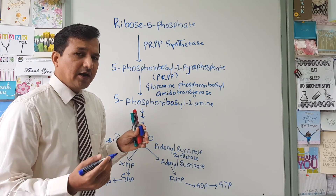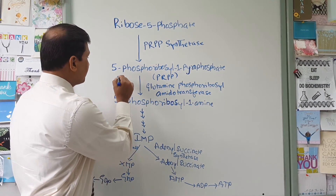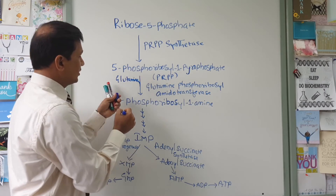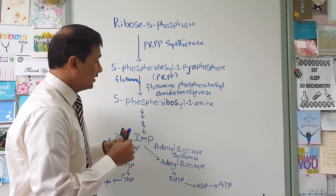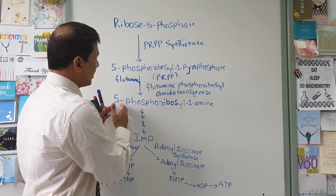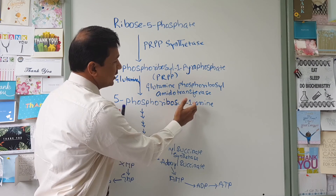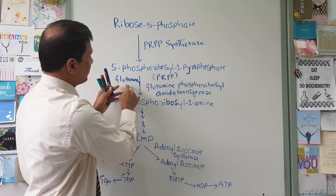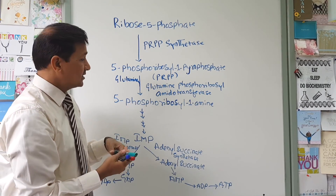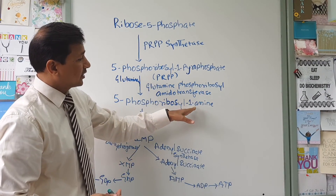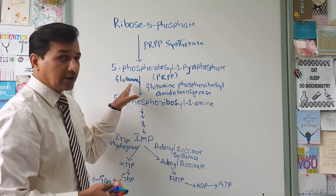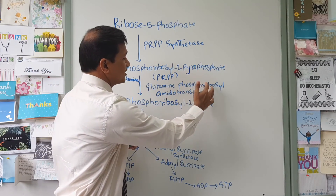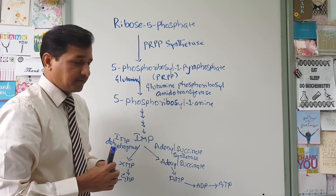This enzyme adds the amino acid glutamine onto PRPP to make 5-phosphoribosyl-1-amine. The pyrophosphate is taken out, and the amino group from glutamine is added — basically, you are getting a nitrogen from glutamine. This job is done by glutamine phosphoribosyl amidotransferase.